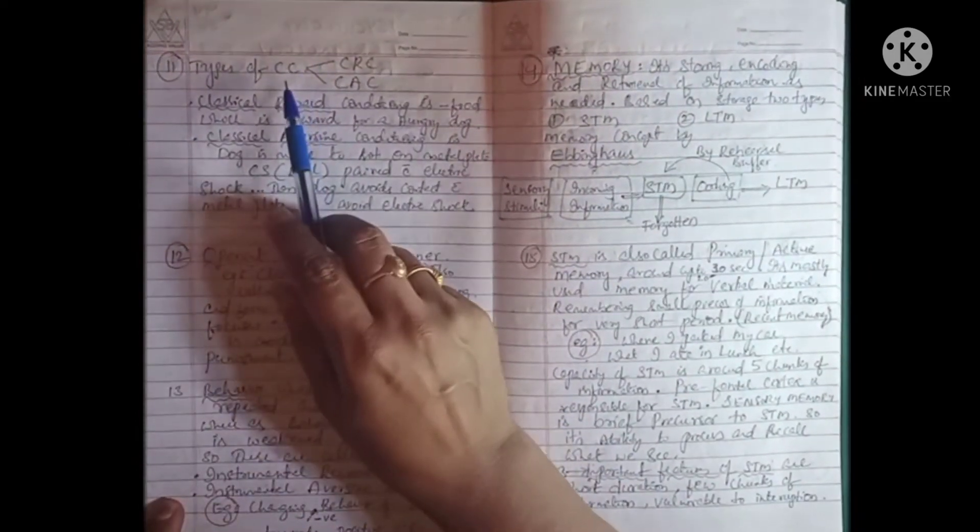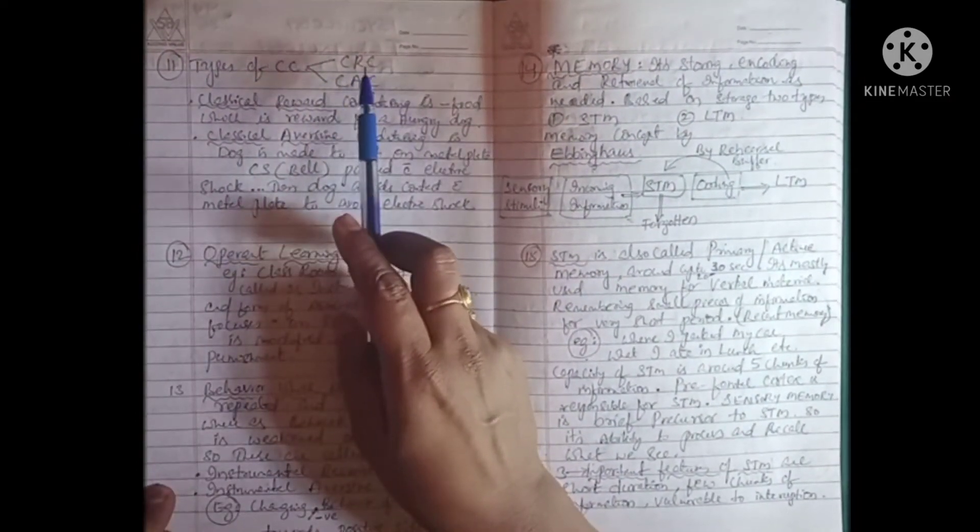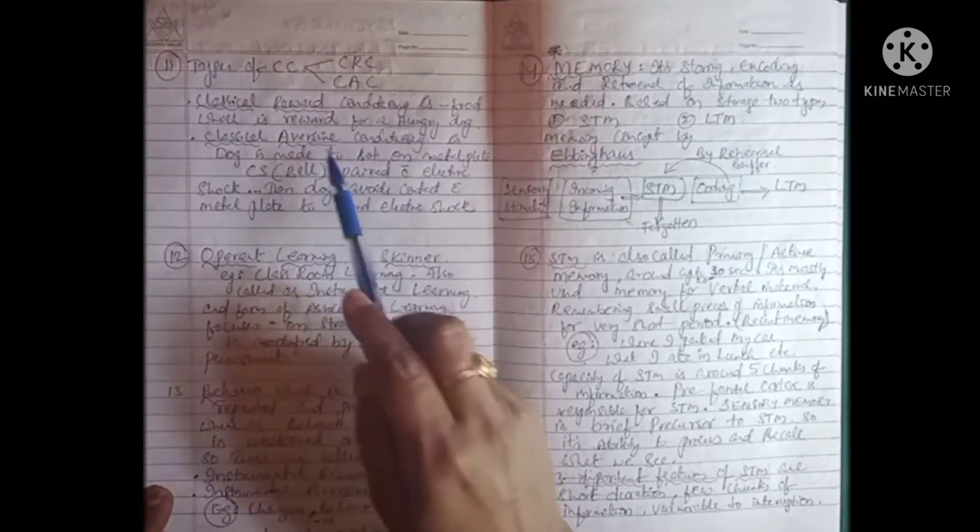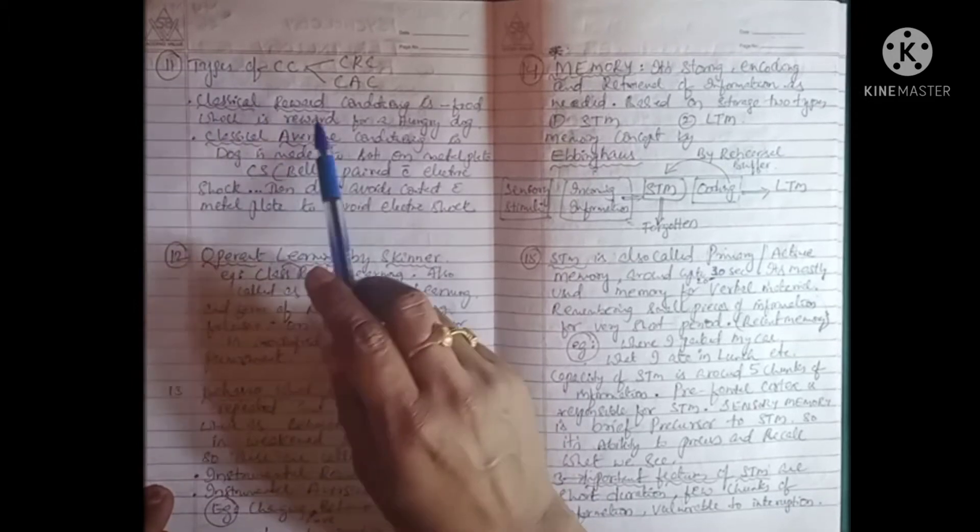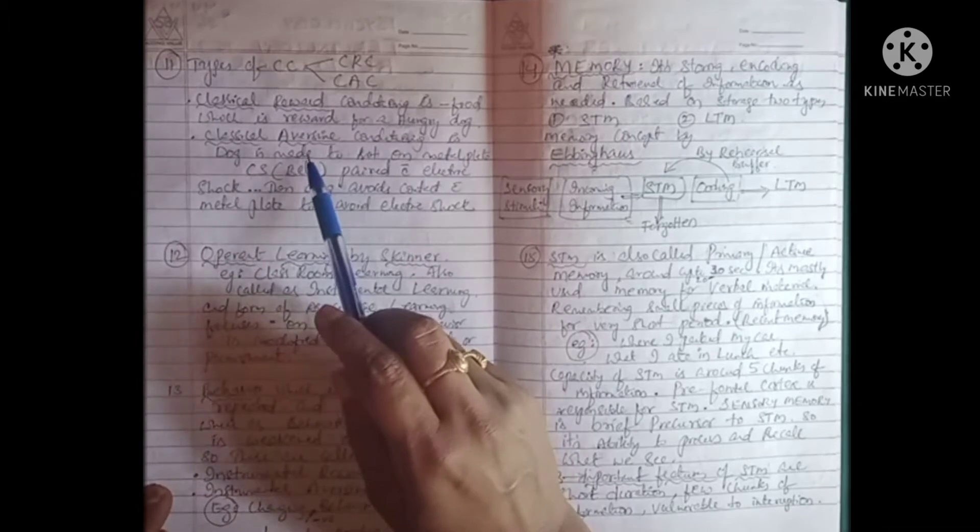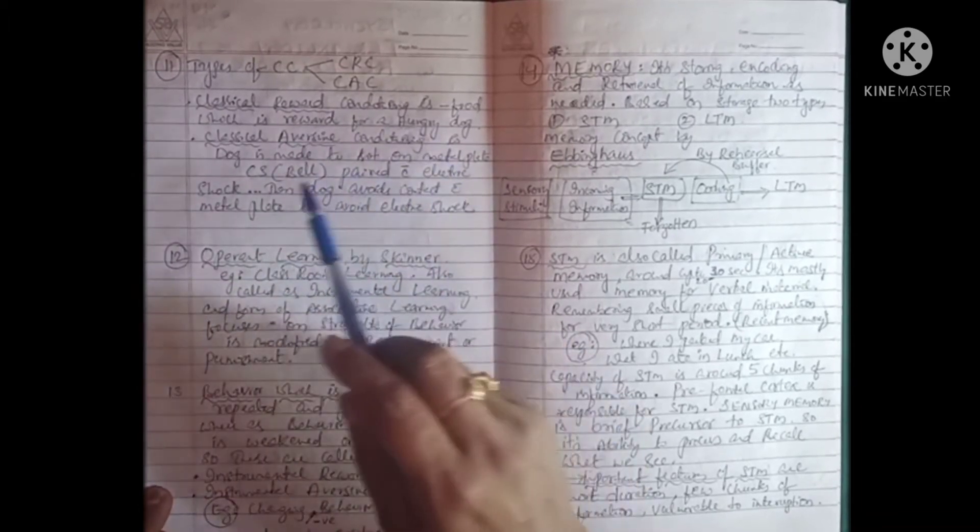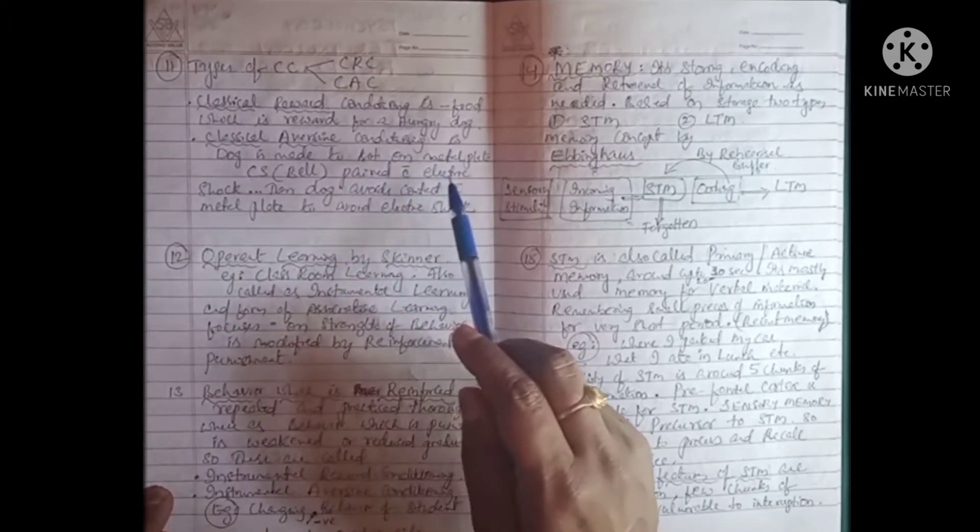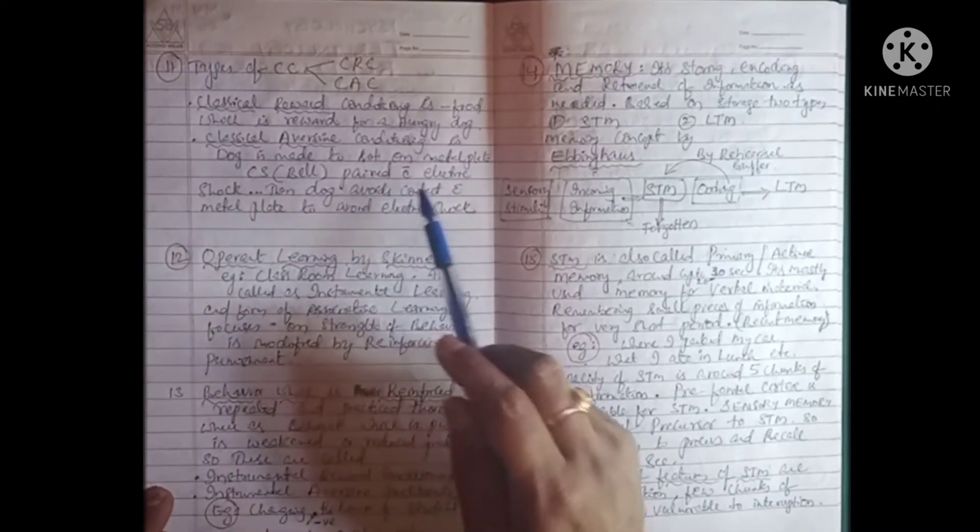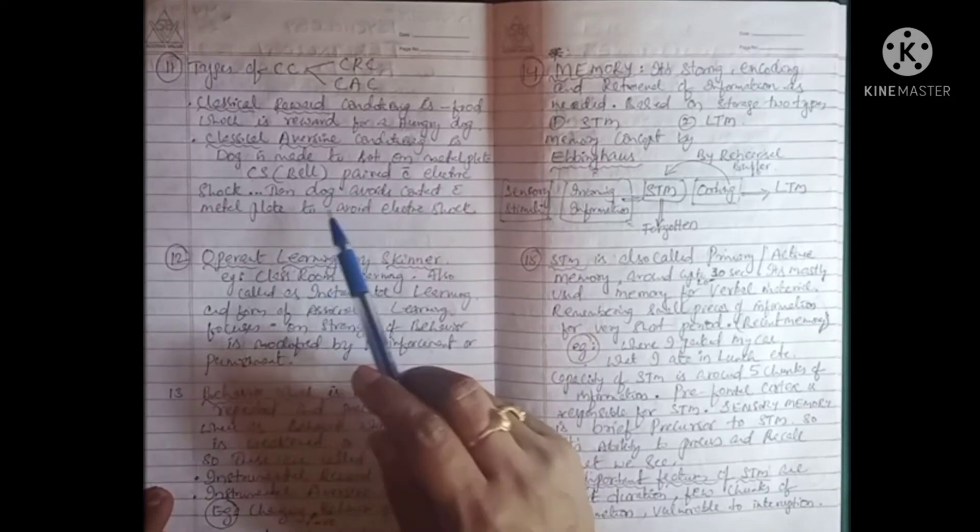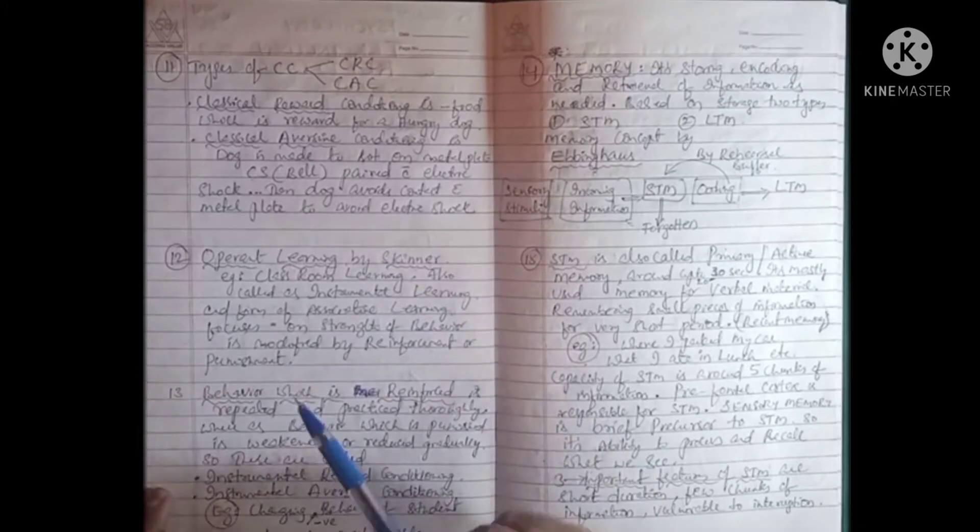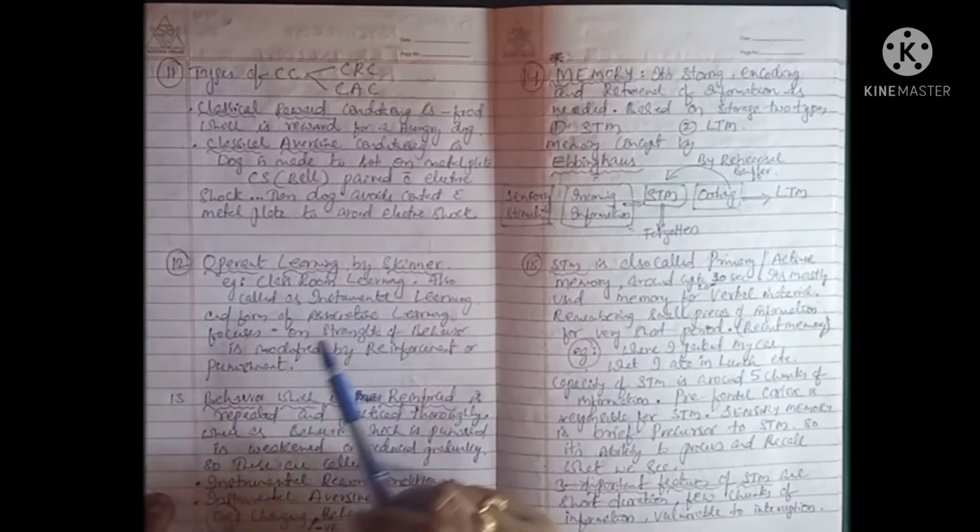Types of classical conditioning: there are two types, classical reward conditioning and classical aversive conditioning. Classical reward conditioning is food which is reward for a hungry dog. Whereas aversive conditioning is dog made to sit on a metal plate with bell paired with electric shock. Then the dog avoids contact with the metal plate to avoid electric shock. That is called classical conditioning.